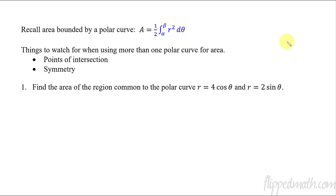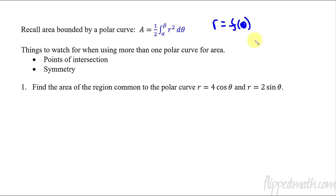We're going to build this off of what we did in our last lesson. As a reminder, here's the area that's bounded by a polar curve: we have one half, then from alpha to beta of r squared d theta. Remember that r is in terms of theta — it's some function in terms of theta.